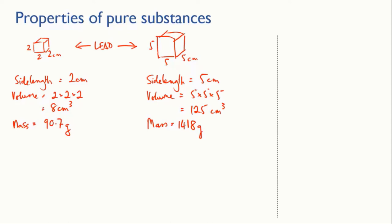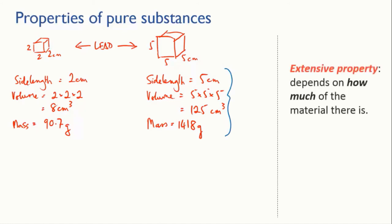So these blocks are made of the same material. They're both made of lead. But their side lengths and their volumes and their masses are different. This kind of property, where it depends how much of the substance is present, is called an extensive property. That's a property that's external to the substance itself, that's imposed on it by its form, if you like.